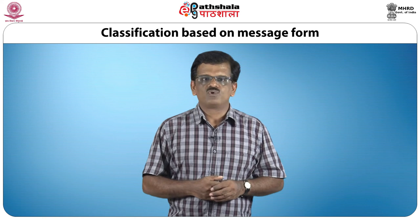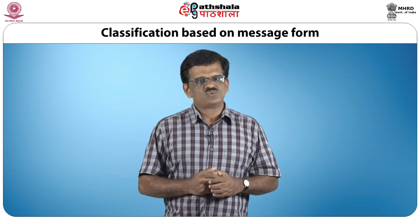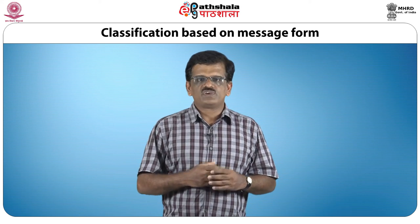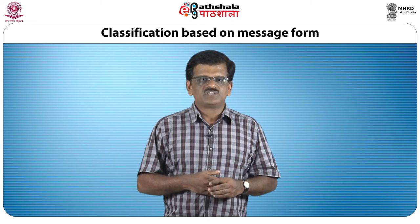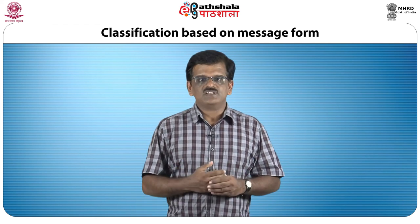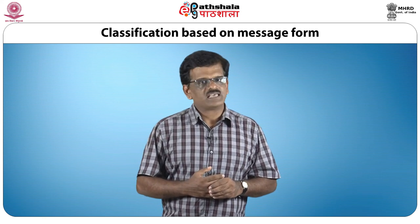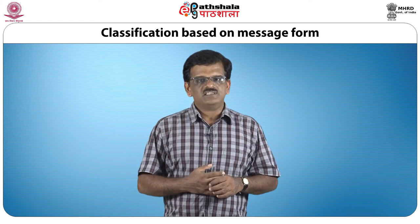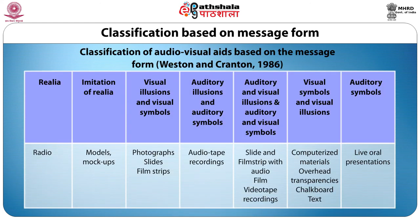Illusionary materials like photographs are more abstract than imitations, where learning is one-dimensional and very limited. For example, a picture of a rice disease shows only a part of the plant without capturing its surroundings. Since diseases are diagnosed by assessing various criteria — damage to leaves, fungal growth at the base, horizontal spread — photographs supply only limited information. Symbolic forms like words and symbols are very difficult to understand and demand very high levels of cognitive processing. Based on this classification, audiovisual aids can be classified into realia, imitation of realia, visual illusions and visual symbols, auditory illusions and auditory symbols, and audiovisual illusions and symbols.